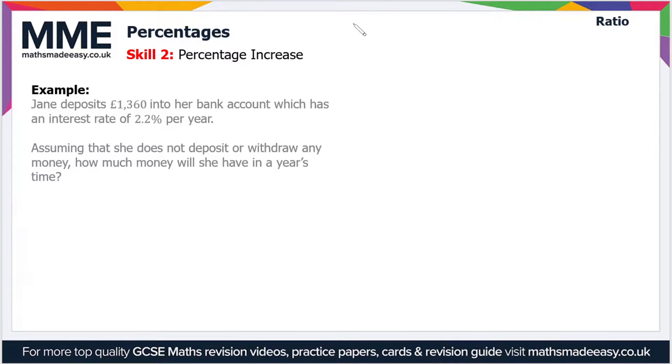When we do a percentage increase, we want to multiply our original value, which is this £1,360, by a value which is greater than one. Because if you multiply it by less than one it'll decrease, if you multiply it by one it'll stay the same, so it has to be a number that's greater than one.